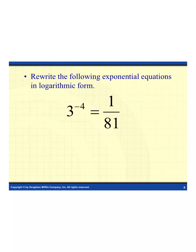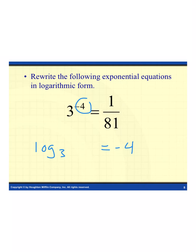Let's rewrite another exponential expression as a log. The base is 3, the exponent is negative 4, and the value is 1 over 81. When we rewrite, it must equal the exponent, so it equals negative 4 — because a log always equals an exponent. The base stays as log base 3, and the exponent and value swap places, giving log base 3 of (1/81) equals negative 4.